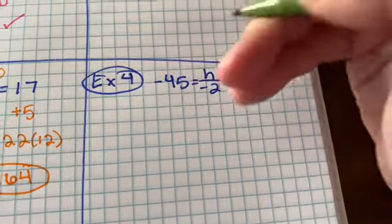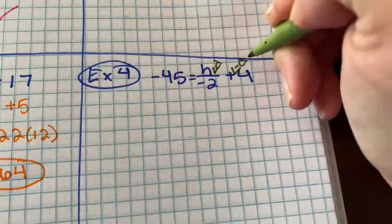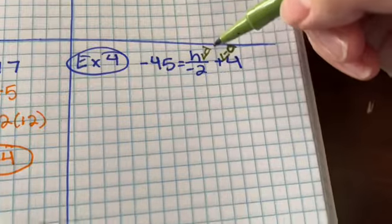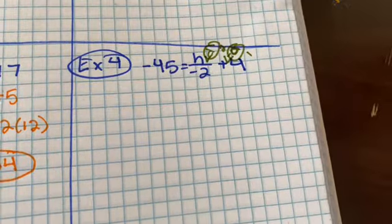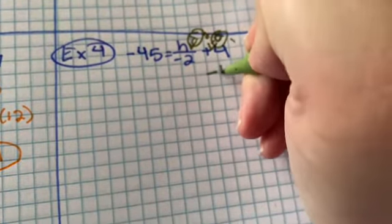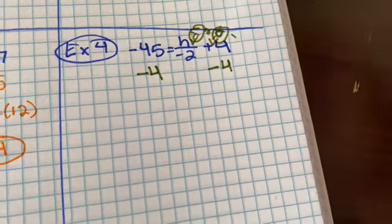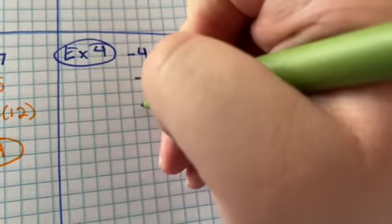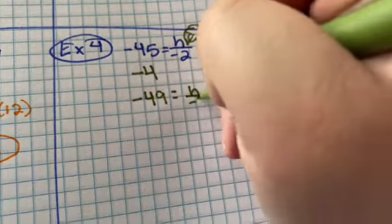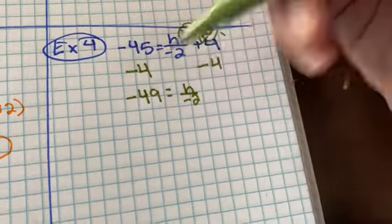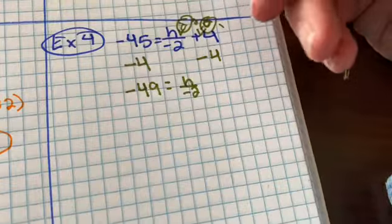Last but not least, we have this one. So this is division again, and this has addition in it. That's an a, not another d. So we have to get rid of this first and the division second again. So what we're going to do is subtract by 4, subtract by 4. This is going to leave negative 49 equals h divided by 2. And we know this is that because you're going more negative, so it's basically like adding these together and then putting that negative there.